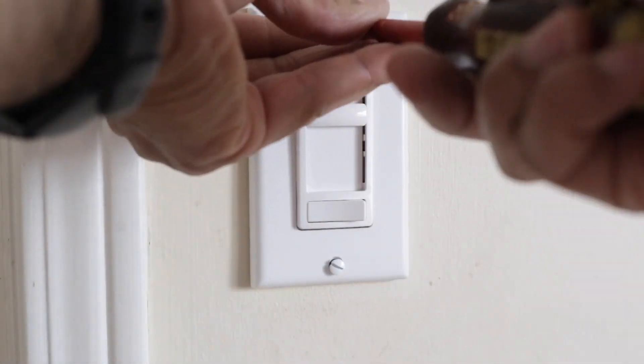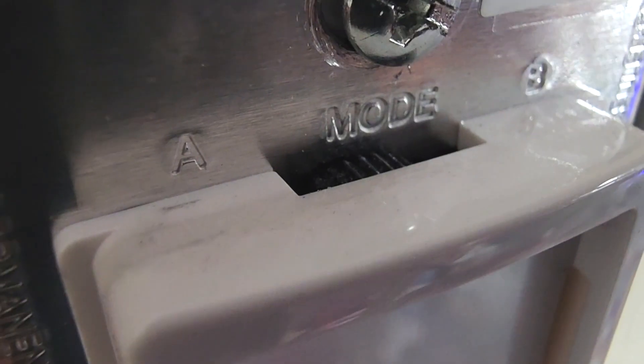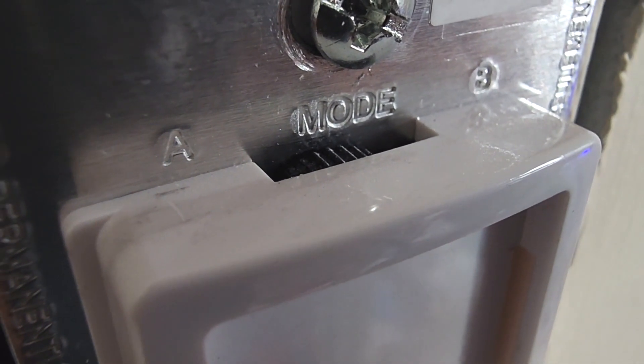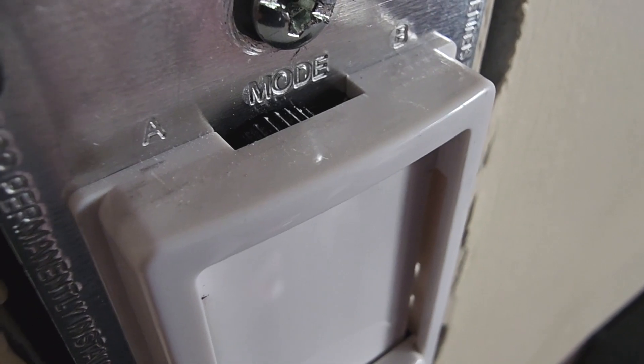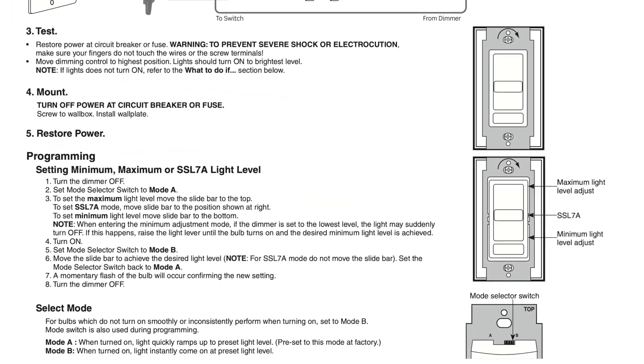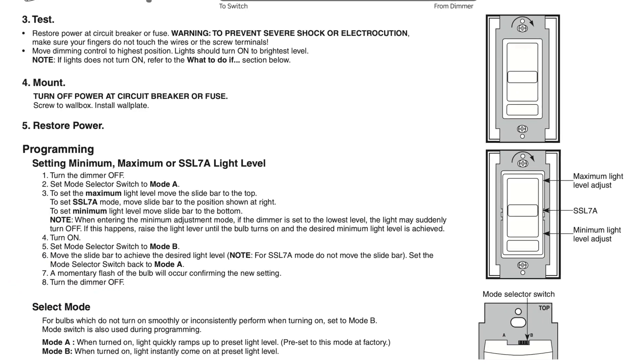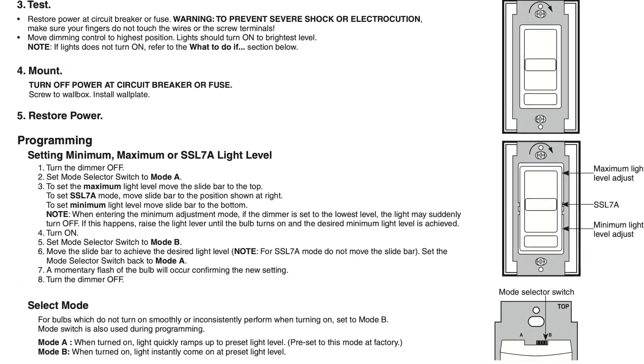So I'm gonna take the cover plate back off because I want to show you guys something. This dimmer has a mode selection switch built into it, and you can use this switch to have your dimmer perform at its best in conjunction with the light you have it working with. Anyways, it says for bulbs that do not turn on smoothly or inconsistently perform when turning on, set to mode B. We'll see what that looks like in a bit.